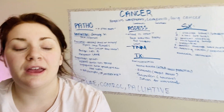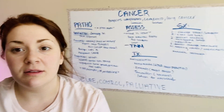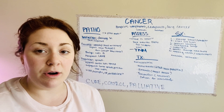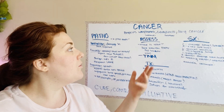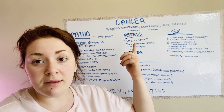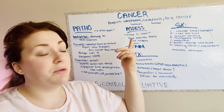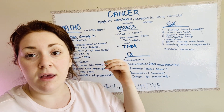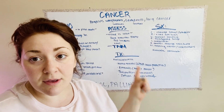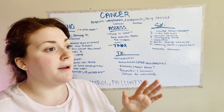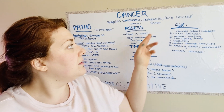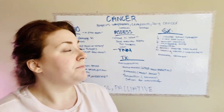Hi everyone. I'm going to try to do cancer in five minutes or less, but it is such a big and complex topic that I might go over. So what are the exemplars for cancer? We're going to do Hodgkin's lymphoma, which is of the lymphocytes — think of the lymphatic system. We have leukemia, which is leukocytes, so with a white blood cell count you'll see very low leukocytes, and then lung cancer.